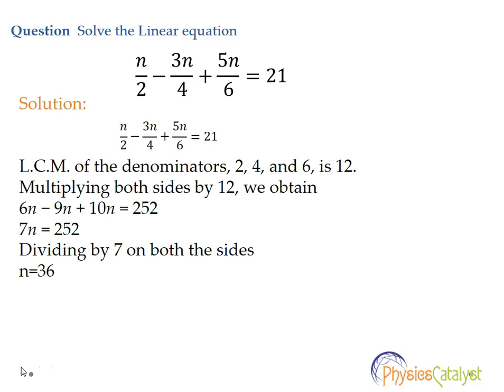Looking at the equation we can see that we have both the numerator and denominator in the equation. So the strategy to solve this question would be to first take the LCM of the denominators. Here the denominators are 2, 4 and 6. Calculating the LCM we get 12.